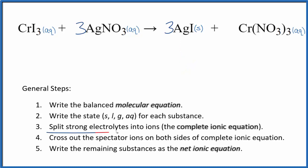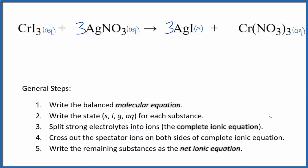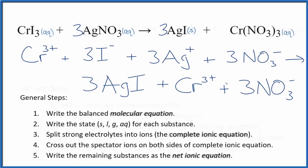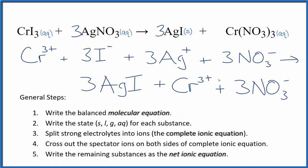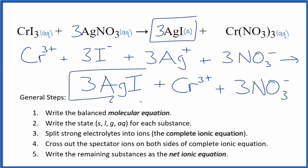Now we can split the strong electrolytes into their ions — that'll give us the complete ionic equation. That looks like this. Note that the solid AgI we do not split apart. In net ionic equations, we don't split the solids up.